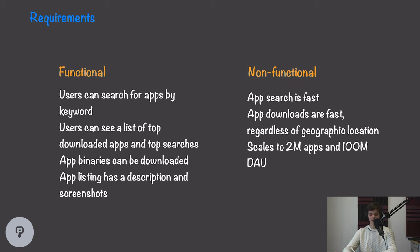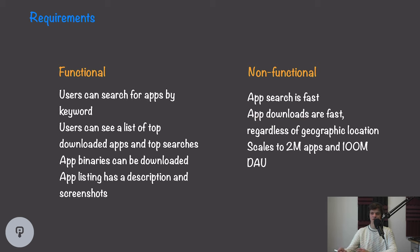For non-functional requirements, we really want app search to be very fast, even under periods of extreme load. We also want app downloads to be fast regardless of the geographic location of our user — anywhere in the world, users should experience low latency when downloading applications. For scale, we're talking about 2 million apps available on the store and about 100 million daily active users.